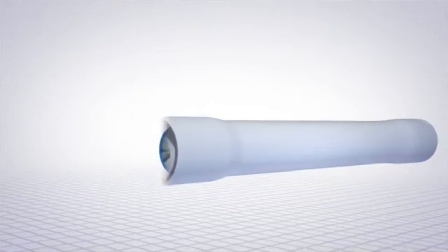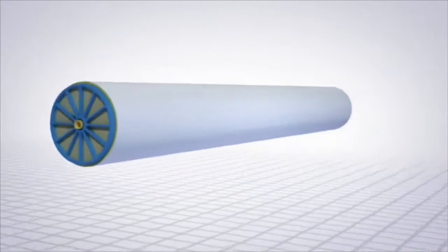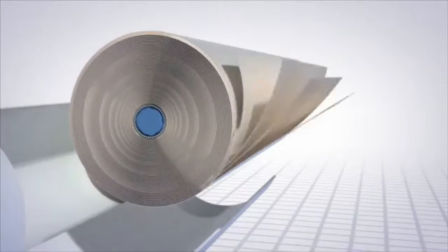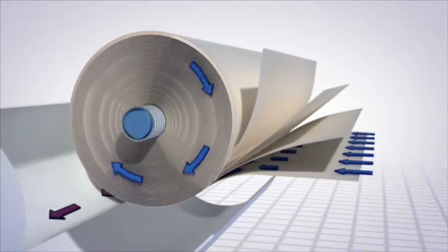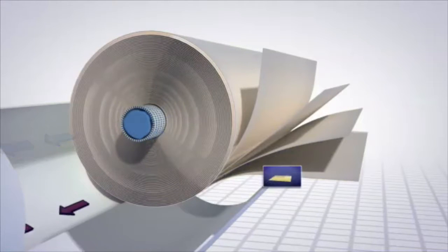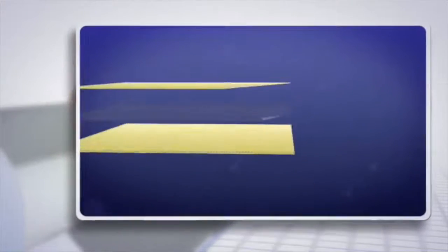Rolls of membrane sheets are wound into cylinder-shaped elements. There are several elements inside each long pressure vessel. As water enters the vessel, it flows over the membrane surface as it moves from one end of the vessel to the other.